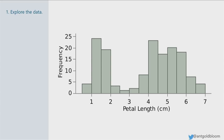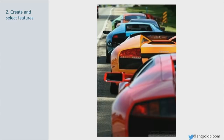Once you have a really rock solid understanding of what's in the data, the second thing you want to do is start creating features. In machine learning parlance we talk about feature engineering. If you're a statistician, you talk about creating synthetic variables. It's really the same thing.